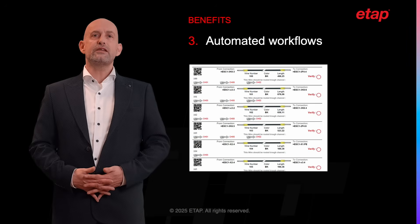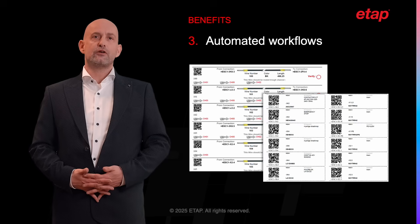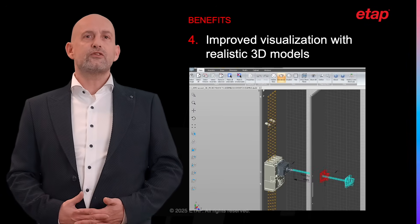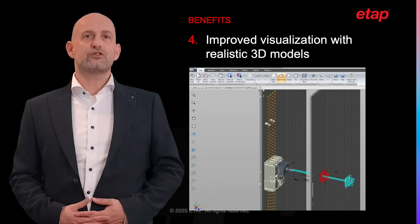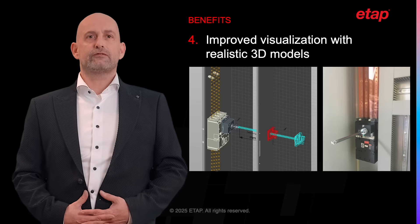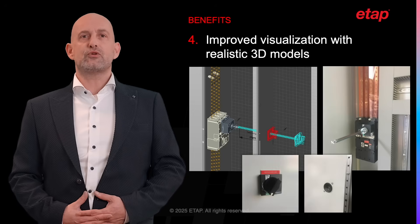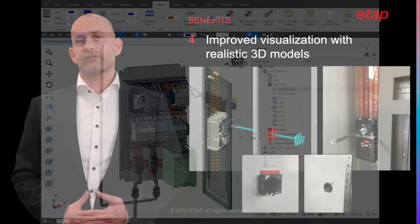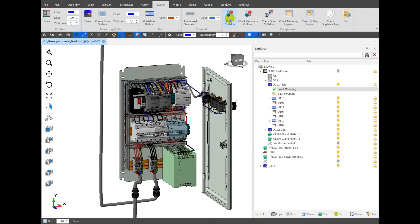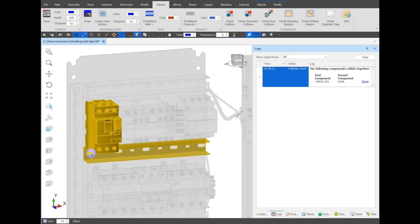C3D Panel automates many of the manual tasks involved in electrical engineering, such as generating wiring and component lists, further reducing the time required to complete projects. The 3D models created in C3D Panel provide a realistic representation of the electrical systems, allowing engineers to visualize the final product more effectively. This enhanced visualization helps by identifying potential issues early in the design process and ensures that the design meets all requirements. The ability to visualize the electrical system in 3D improves communication between engineers and production teams, leading to more accurate and efficient assembly.